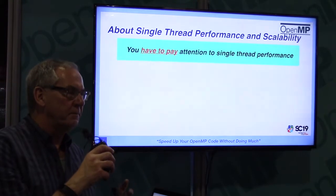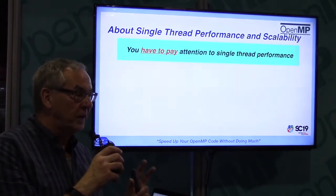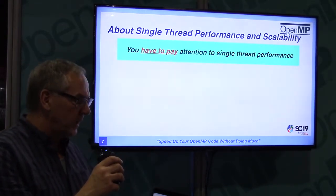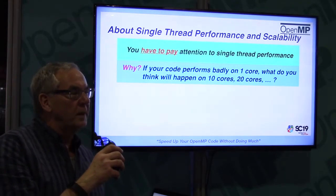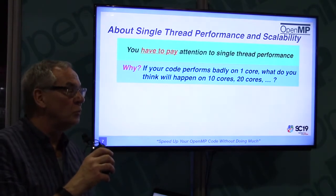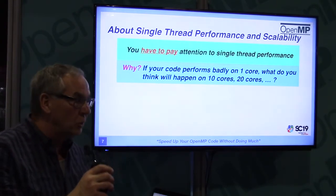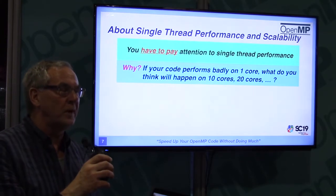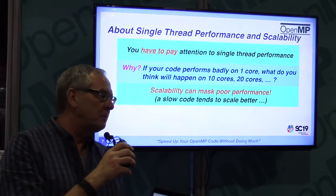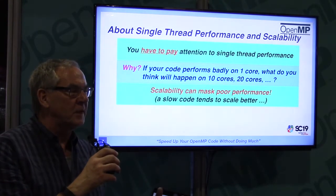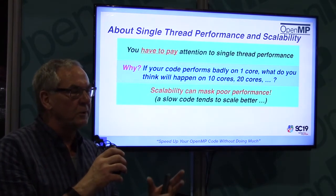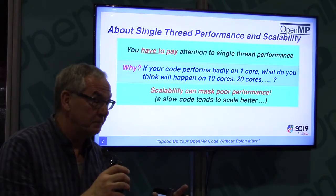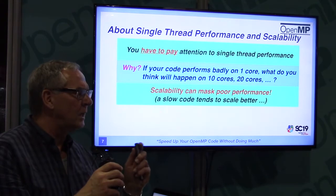First of all, never forget to tune your code for single-thread performance. Very often that's ignored. People think they can skip it because they're interested in parallel computing. But think about it — what if your program doesn't run well on one core? What do you think will happen on two, ten, twenty, or a hundred? It'll get worse. Don't ignore single-thread performance. And don't be blinded by scalability — slow code scales better in general, so always ask for the actual run time.